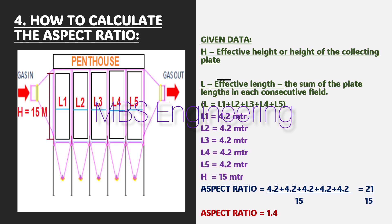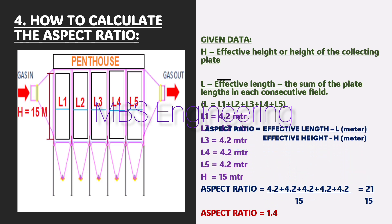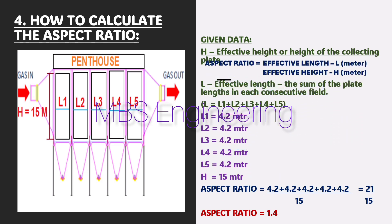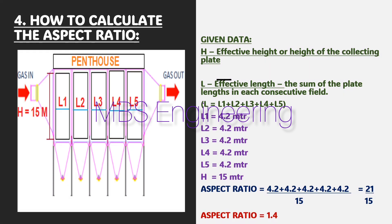Then, the aspect ratio equals effective length (L1 + L2 + L3 + L4 + L5) divided by effective height H. That means 21 meters divided by 15 meters. As per the given data, the aspect ratio is 1.4. The aspect ratio is usually greater than 1 for high efficiency ESPs, and should be high enough to allow the rapped particles to settle in the hopper before they are carried out by the gas flow.